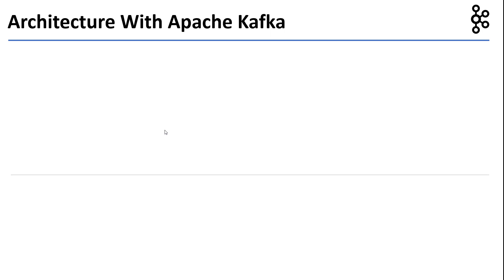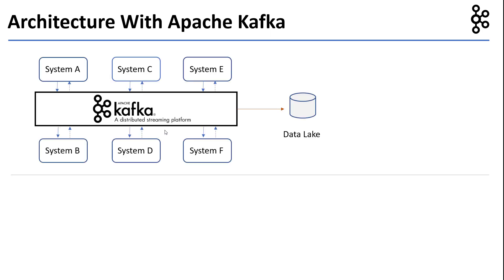Let's see how Apache Kafka can reduce some of the problems and limitations with traditional architectures. As you can see in this picture, instead of point-to-point integrations, systems now exchange data via Kafka. For example, system A puts messages to Kafka and system B consumes that data from Kafka.